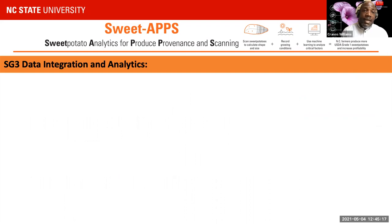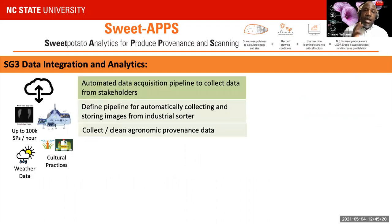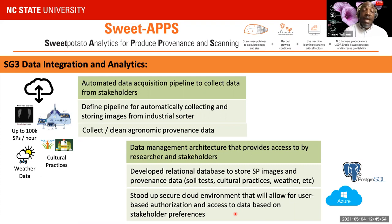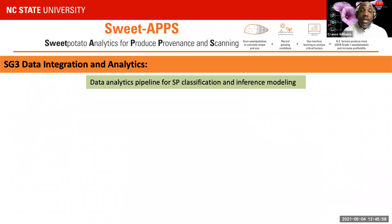For Strategic Goal 3 — the data analytics and integration part — two main aspects needed to be put in place. One was the automated data acquisition pipeline that allowed us to collect images from the scanner and also collect and clean agronomic data. We established a Postgres database in a cloud environment that allows both researchers and partners in our stakeholder group to access these data. With these data in place, the goal is to develop an analytics pipeline for both sweet potato classification and inference modeling.